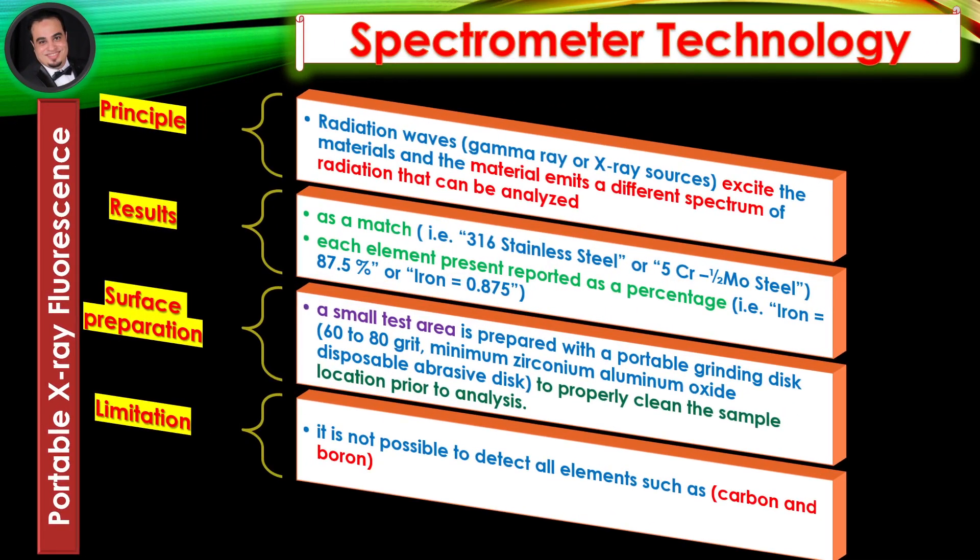Spectrometer Technology — Portable X-ray Fluorescence. Principle: Radiation waves, gamma ray or X-ray sources, excite the materials and the material emits a different spectrum of radiation that can be analyzed.